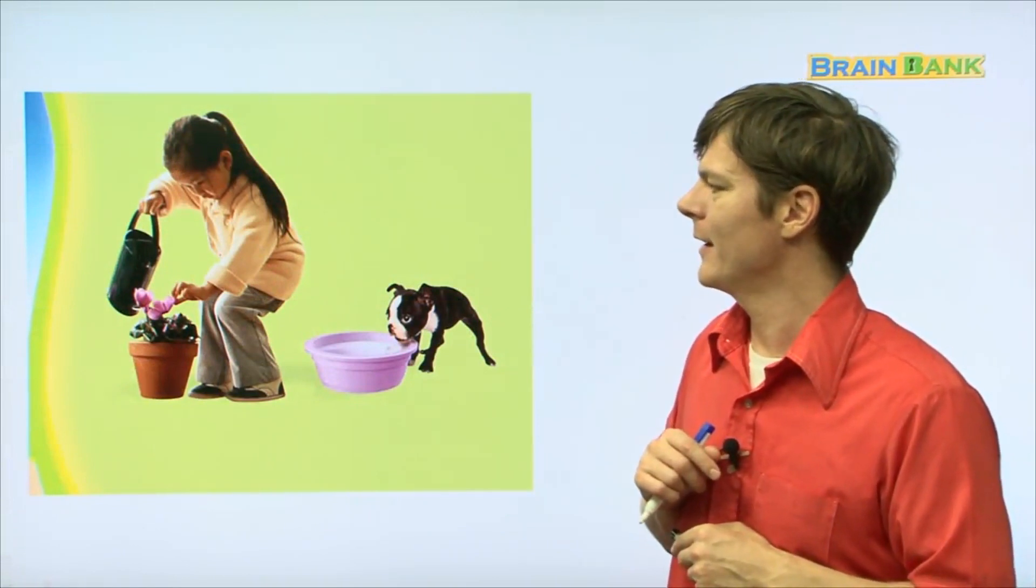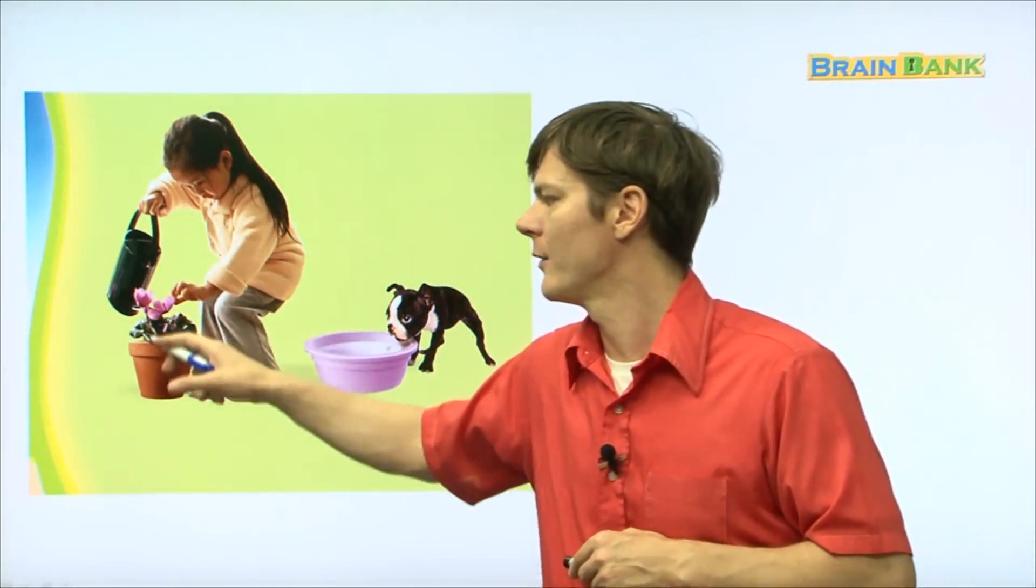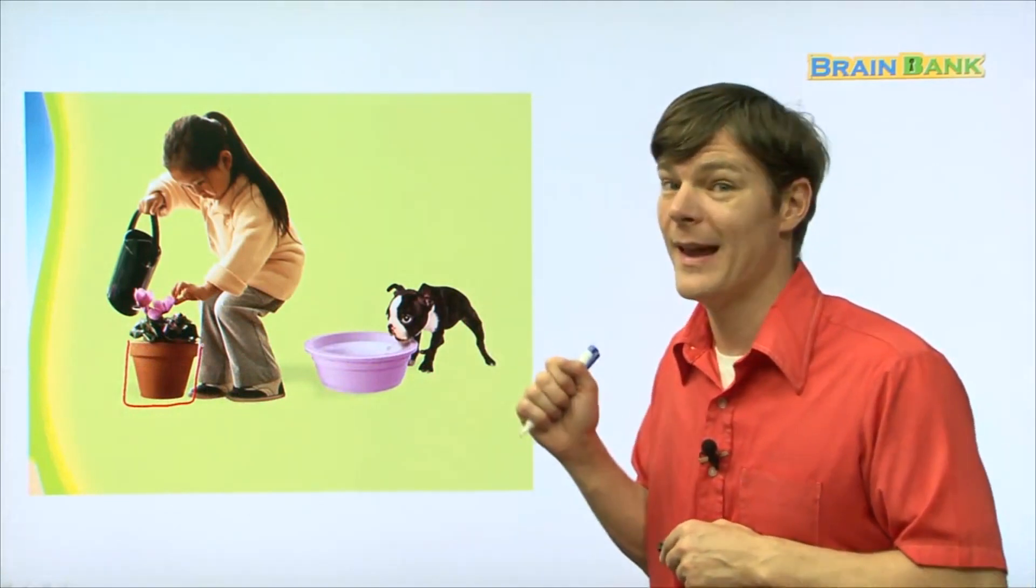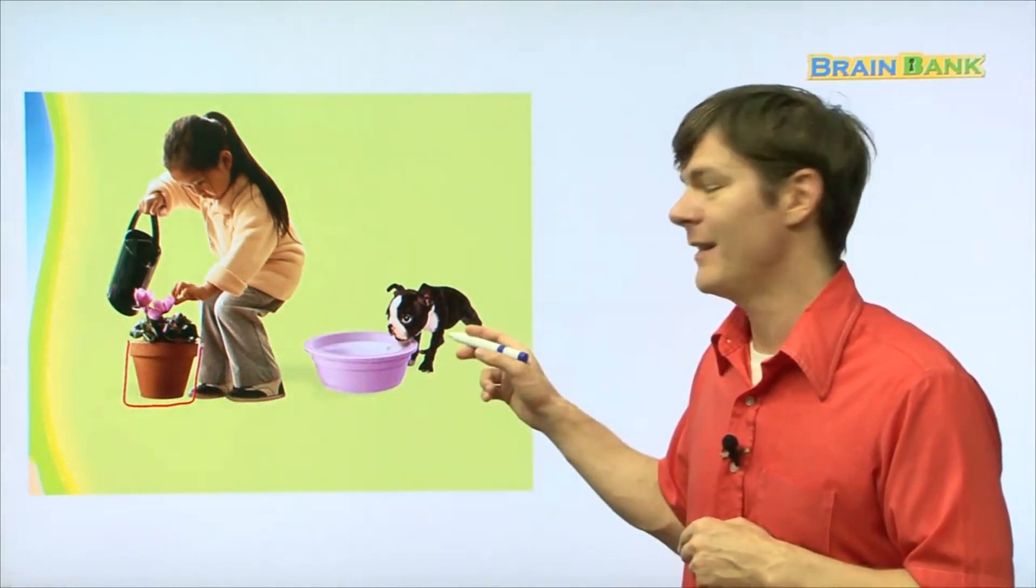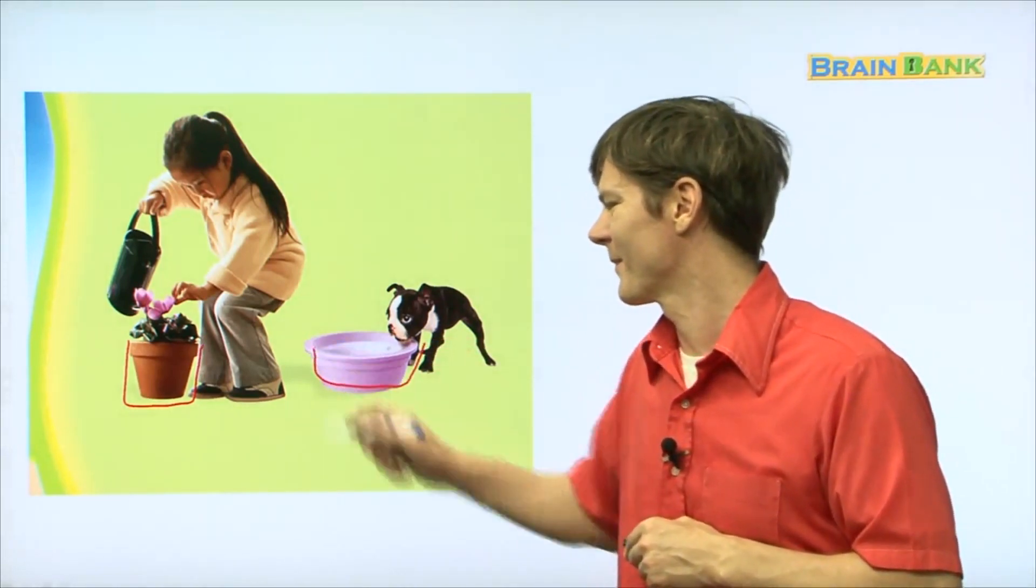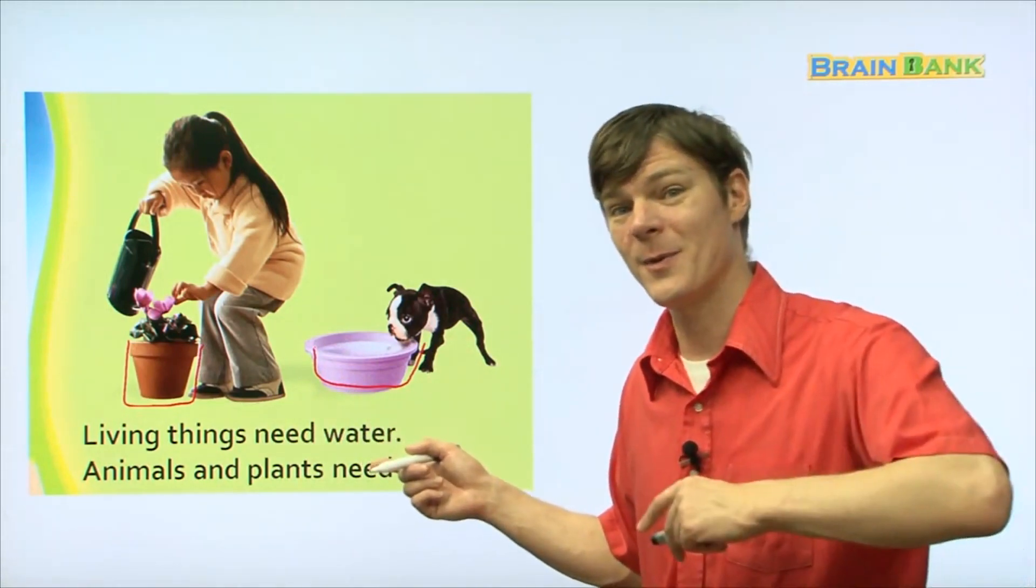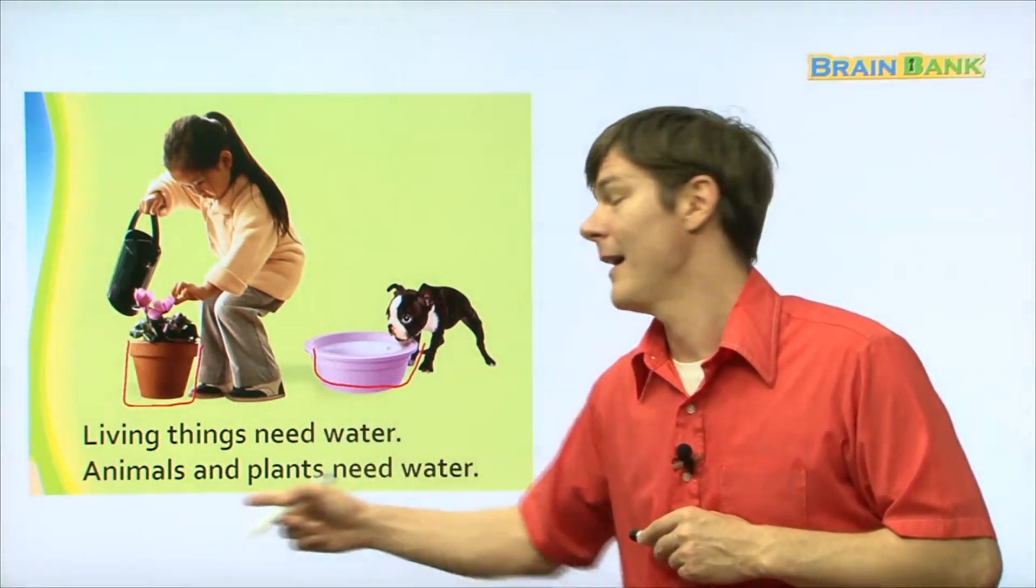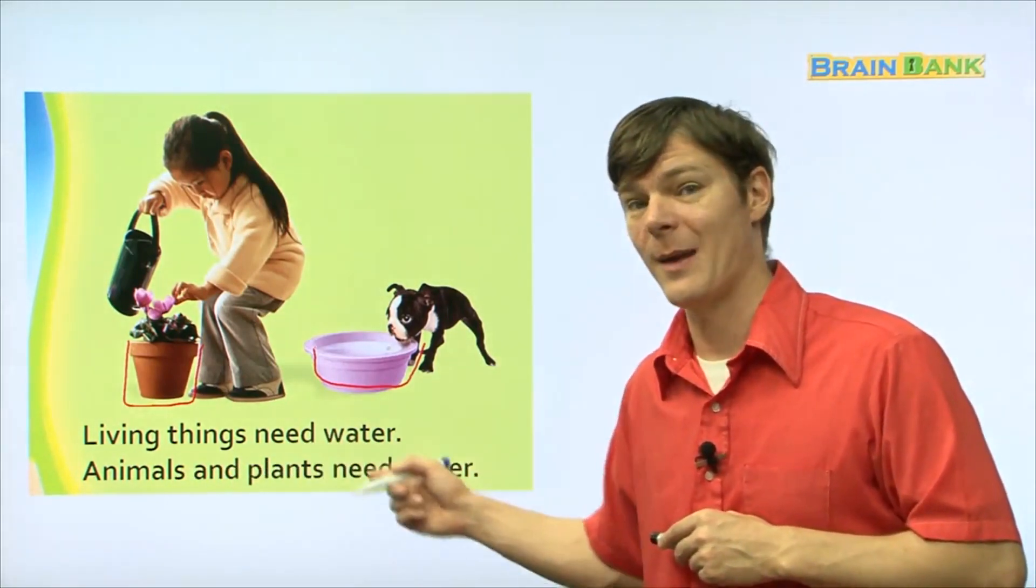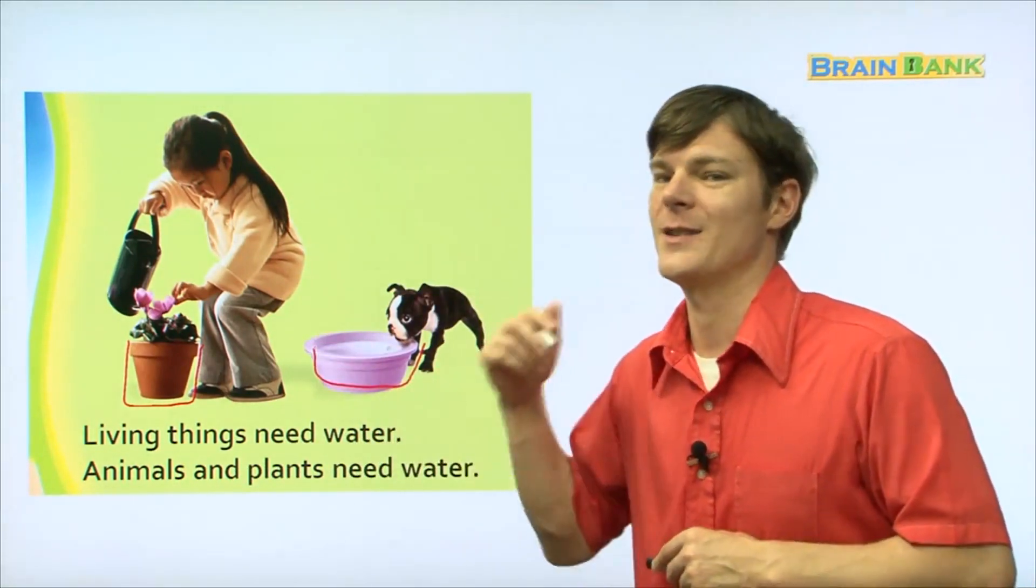Now, look at this. This little girl, it looks like she's giving water to this plant right here. She's watering the plant. And then, this dog, this cute little dog, he's drinking too. Living things need water. Everyone read with me. Living things need water. Animals and plants need water. Animals and plants need water. Both of them. Everything in this picture needs water.